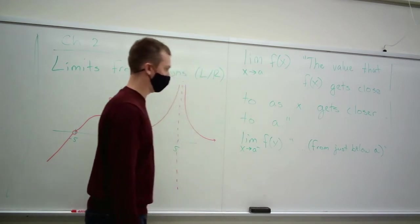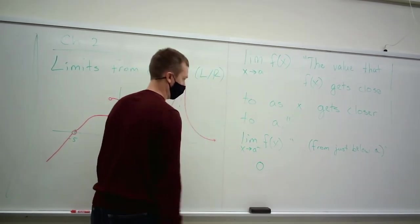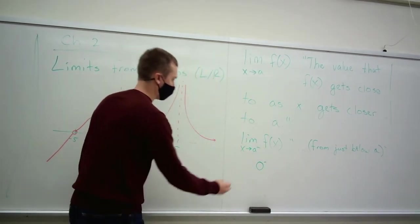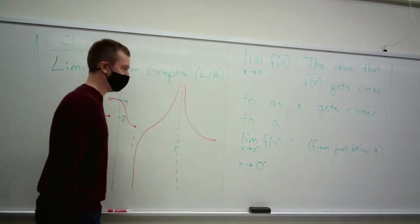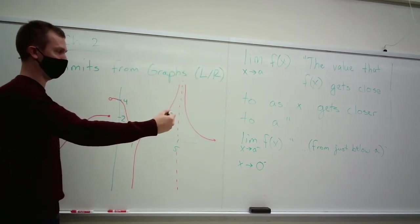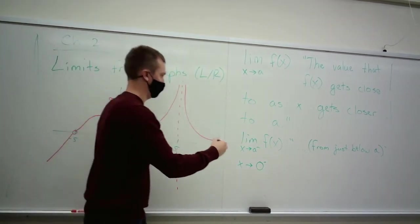So if a was zero, for example, and you saw a negative here, and x was getting closer to that, you'd be picking numbers that get closer to zero, but from the negative side.